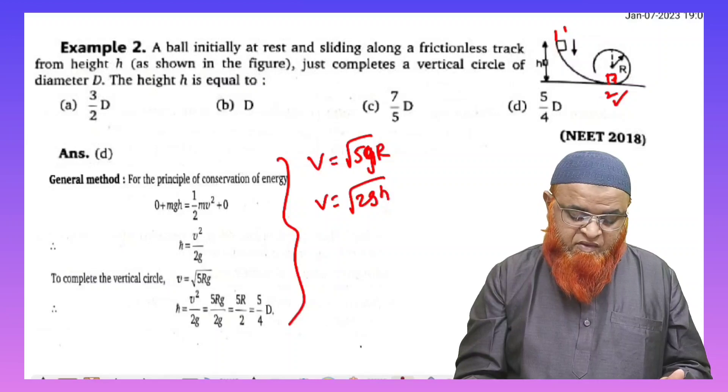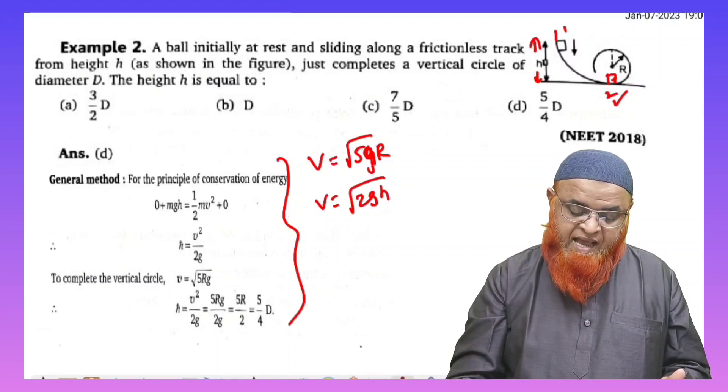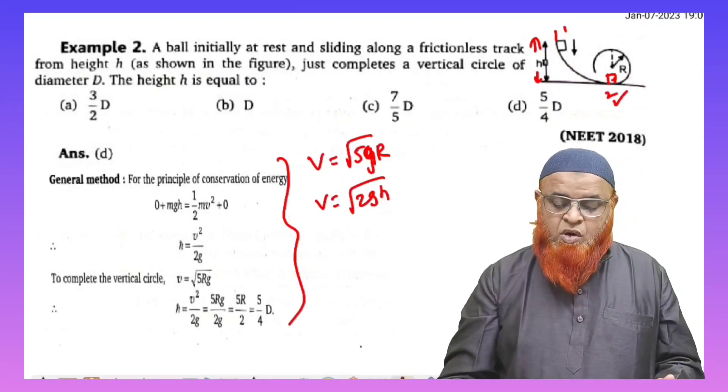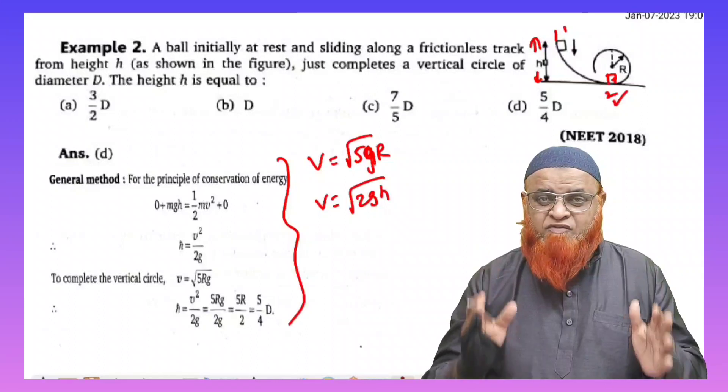we can also consider the velocity as square root of 2gh because height is considered as h in this diagram here. So as from here it is sliding down, the velocity is taken as root of 2gh.